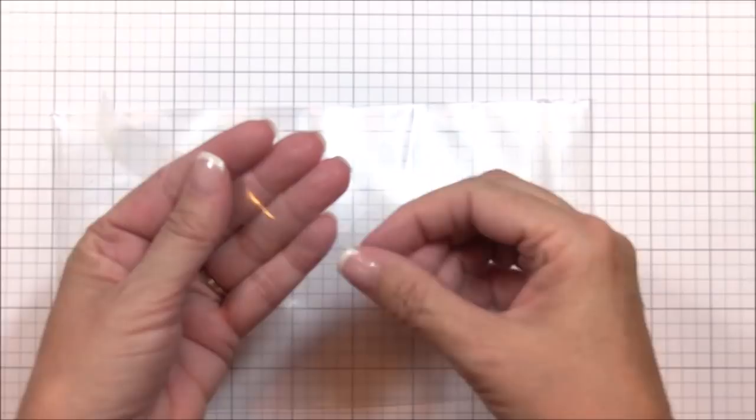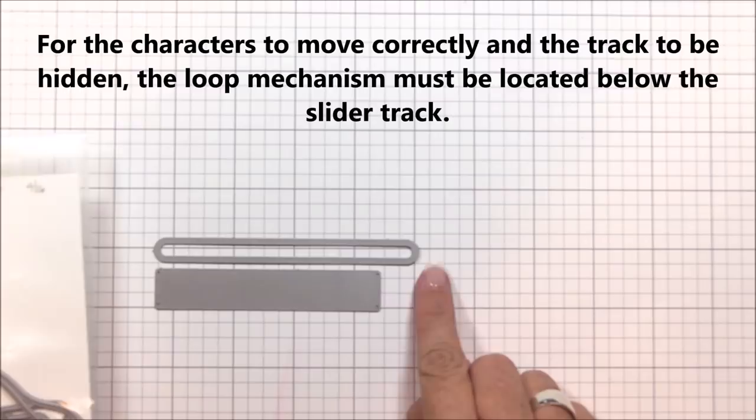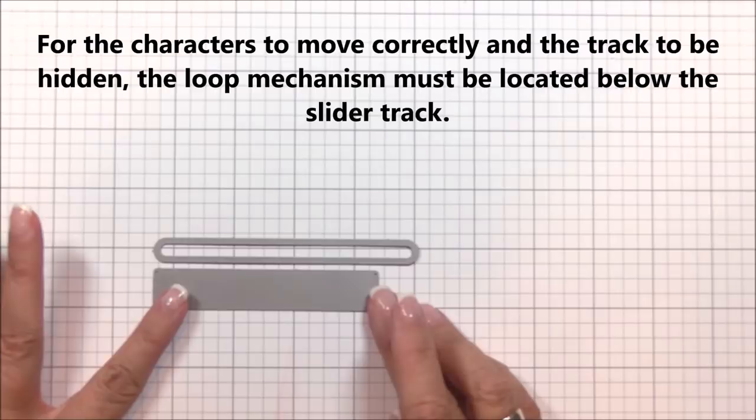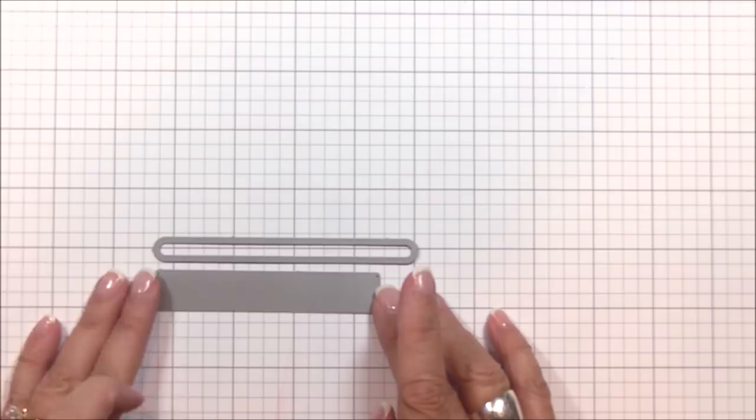I thought it'd be a good idea to share a little bit of the engineering science behind how this mechanism works. I'm using the longest channel die from the surf and turf dies. In order for the characters to slide along, it's important to have the loop below the channel. You'll notice that the channel is longer than the slot die, and that's okay because with the partial die cutting technique, you can make the slots as far apart as you need them to be.